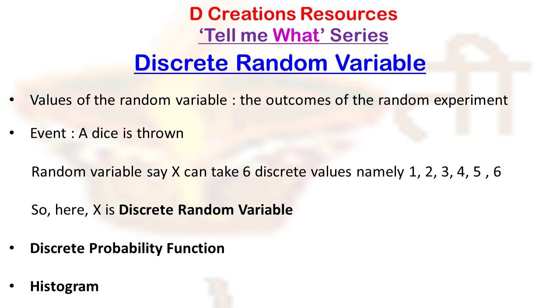A discrete probability function or distribution can be depicted graphically by a histogram. So how do you construct a histogram for a particular probability distribution?